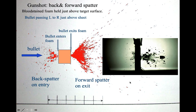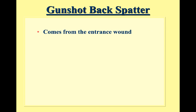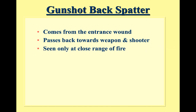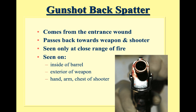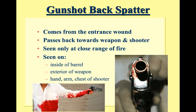Back spatter comes from the entrance wound and passes back towards the weapon and shooter. We usually only see this at close range — if someone is shot from far away they generally don't get back spatter. As a forensic scientist, we look for this on the barrel, on the weapon, and on the hand, arm, and chest of the shooter. Criminals sometimes wipe blood off the gun but forget to check inside the barrel, which is where forensic scientists often look.